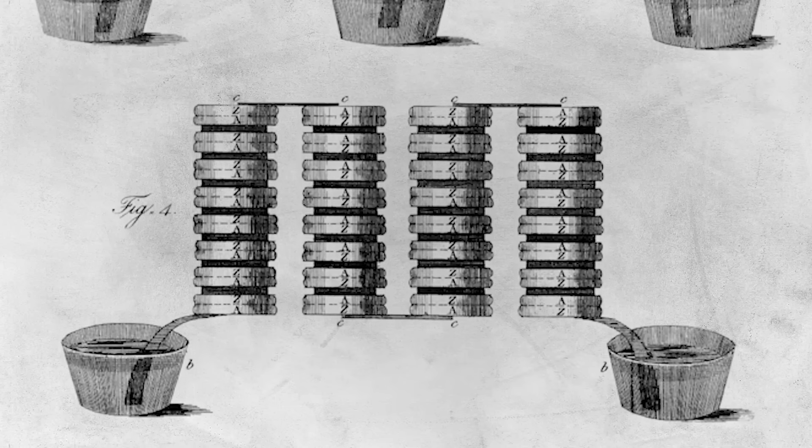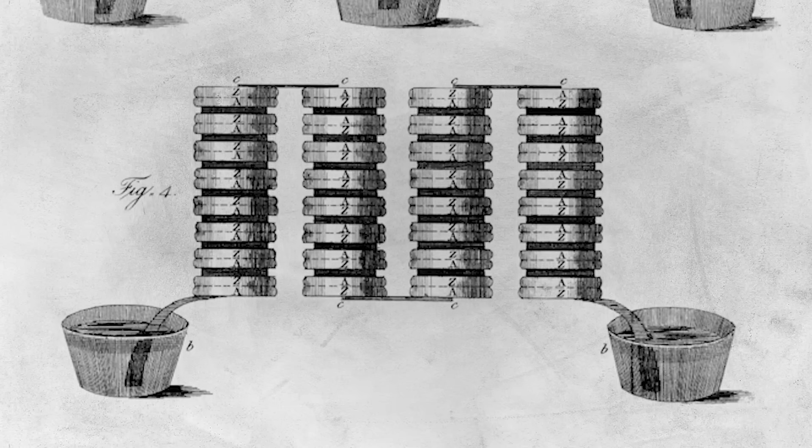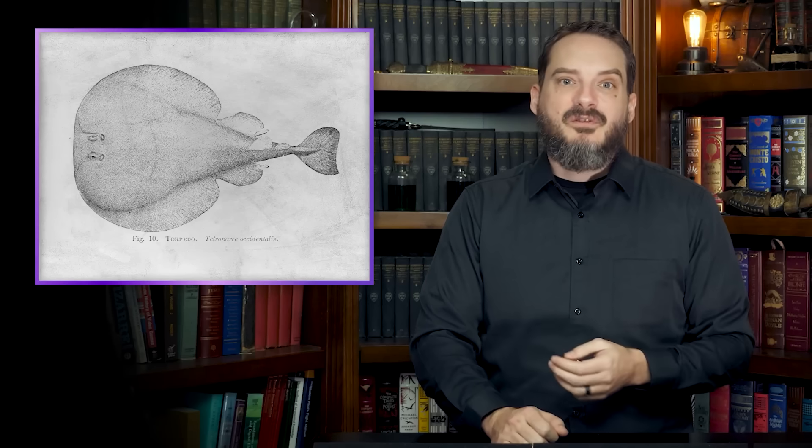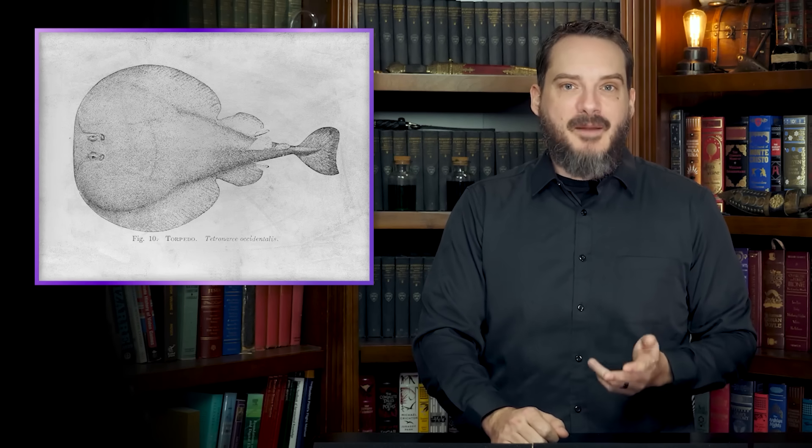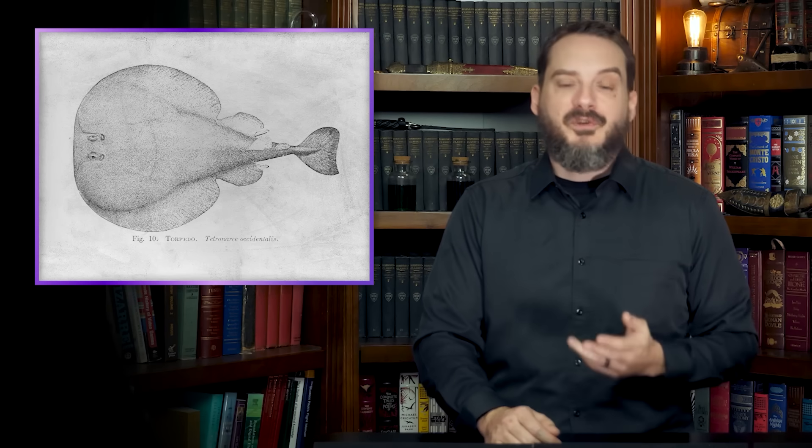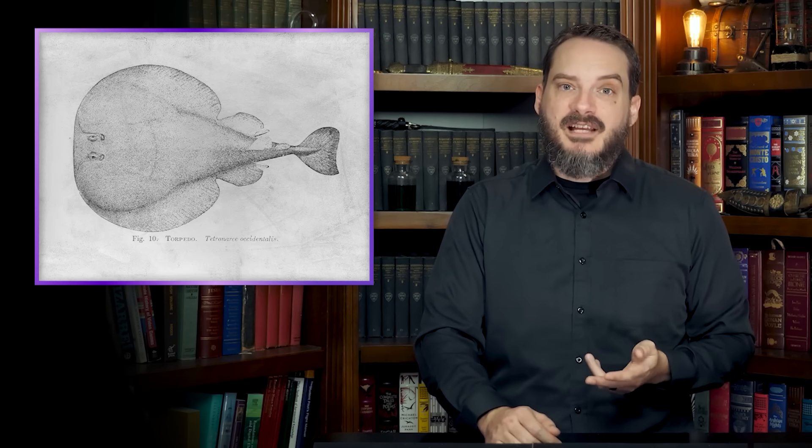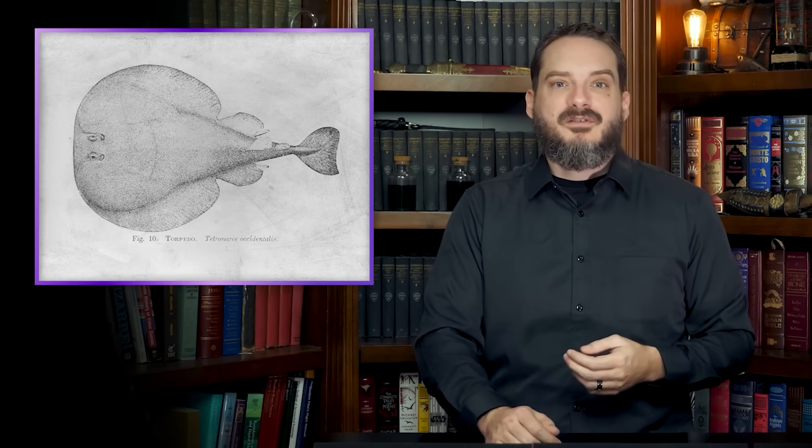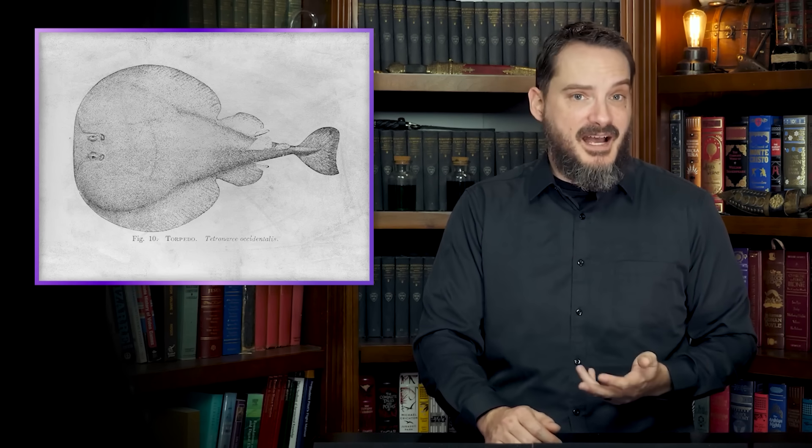Interestingly, the design of the pile was inspired by the anatomy of the torpedo Nobelana, a type of ray known to produce powerful jolts of electricity to stun its prey. But while the torpedo ray's electric organs do indeed consist of multiple stacked structures called electrocytes, the process by which these produce electricity is entirely different to that of Volta's pile.